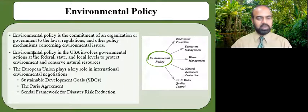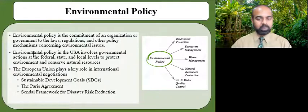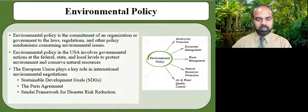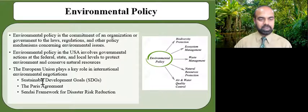Environmental policy in the United States involves governmental actions at the federal, state, and local levels to protect the environment and conserve natural resources. Environmental protection is balanced with other public policy concerns such as economic growth, affordable energy, and the rights of businesses and individuals. The environmental policy process takes place within the political context and reflects tension between political considerations and scientific knowledge.